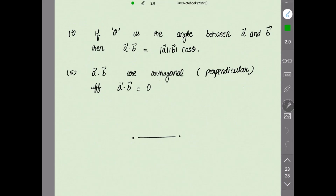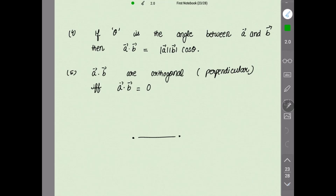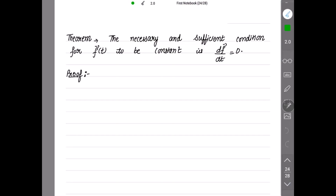Fourth remark: if theta is the angle between vector a and vector b, then their dot product equals |a|·|b|·cos(theta). Fifth remark: vectors a and b are orthogonal — meaning perpendicular — if and only if their dot product equals zero. If the vectors are perpendicular, their dot product is zero, and conversely, if the dot product is zero the vectors are orthogonal. This is because cos(90°) = 0.